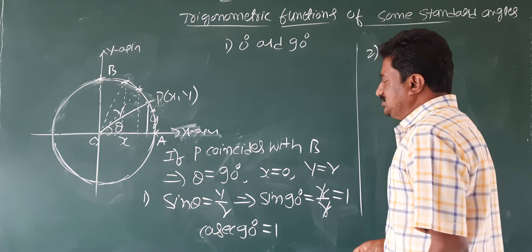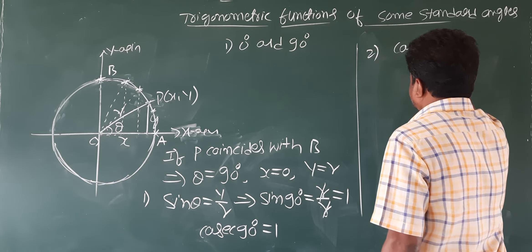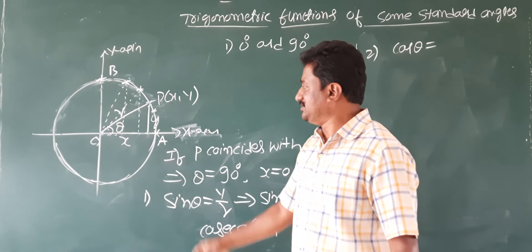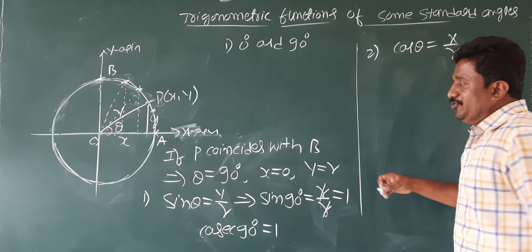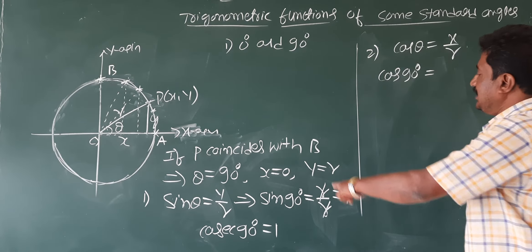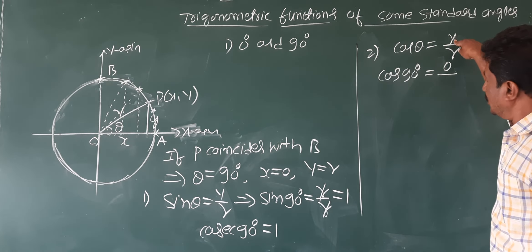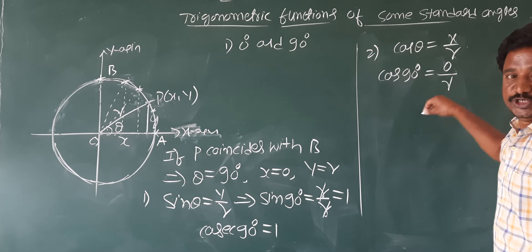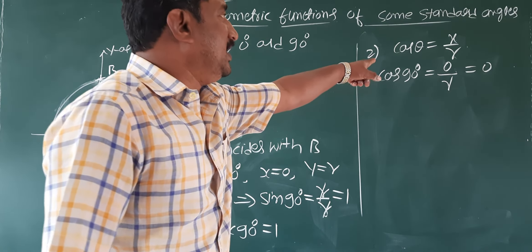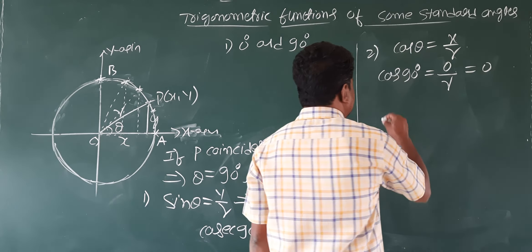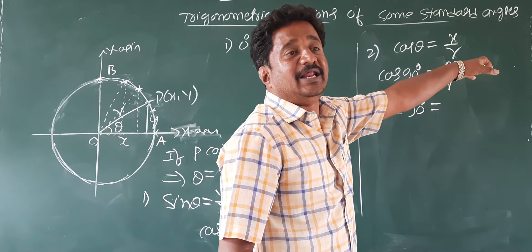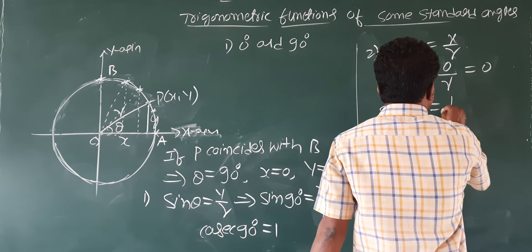Cos theta is adjacent by hypotenuse, which is x by R. If theta becomes 90 degree, x becomes 0. So cos 90 degree equals 0 by R, which is 0. Reciprocal of cos is secant, so secant 90 degree is 1 by 0, which is infinity — not defined.